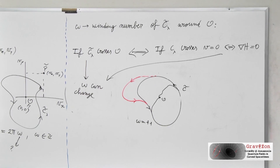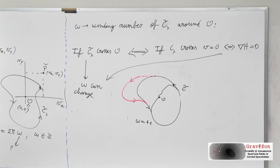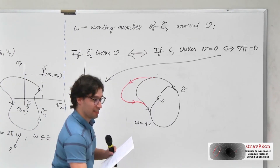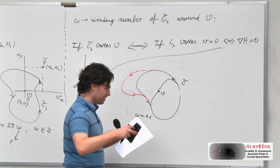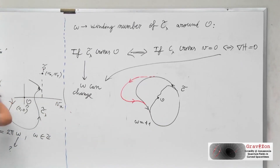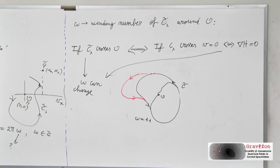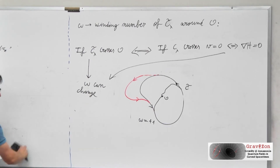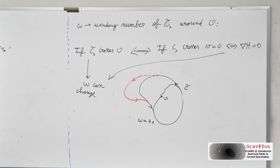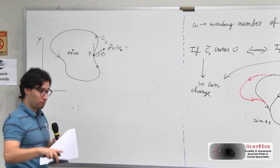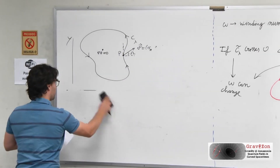A good anticipation of what comes next: if you have several critical points, you can make a deformation of the curve to isolate it around each one, then associate not only a topological charge to the contour as a whole but to each critical point individually. That is exactly what we are going to do.